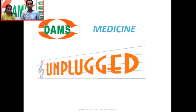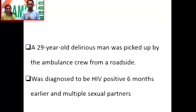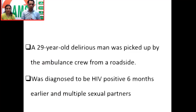So let us start by discussing the history of the patient. This is the case of a 29-year-old delirious man who was picked up by the ambulance crew from a roadside. When we further looked at his history, he was diagnosed to be HIV positive six months back and he has a history of multiple sexual partners. So we are dealing with an HIV positive, relatively young man, found in a delirious state by the ambulance crew.